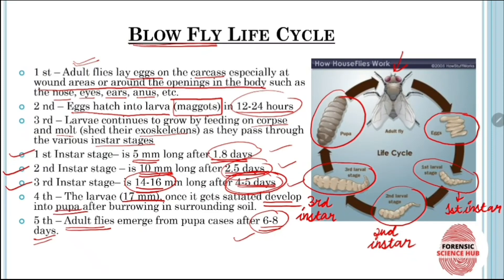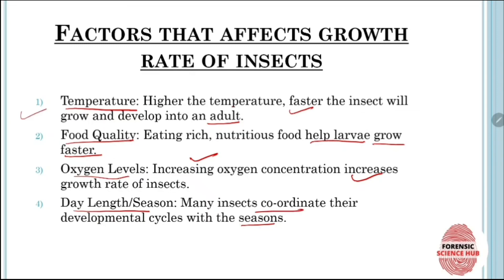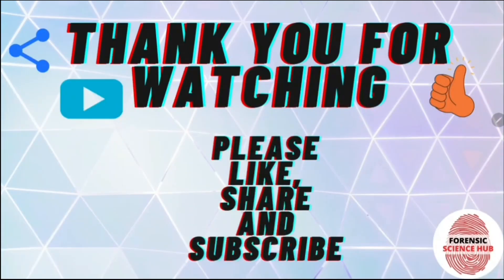Several factors affect the growth rate of these insects. Higher temperature means faster insect growth and faster development into adults. Food quality also matters — rich, nutritious food helps larvae grow faster. Increasing oxygen levels increases the growth rate of insects. Day length or season also plays a role, as many insects coordinate their developmental cycles with the season. So temperature, food quality, oxygen level, and season all affect insect growth rate.